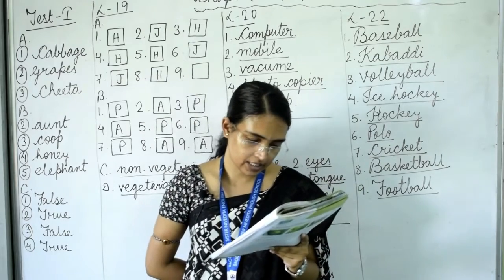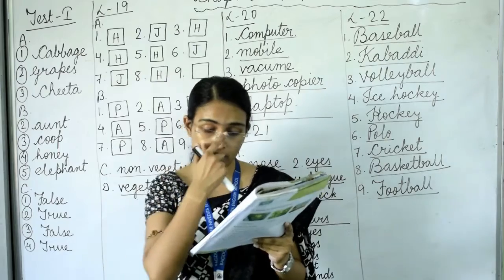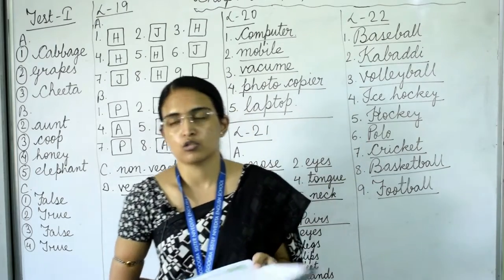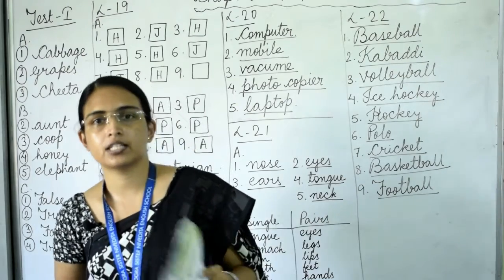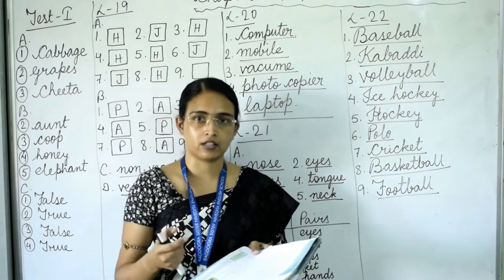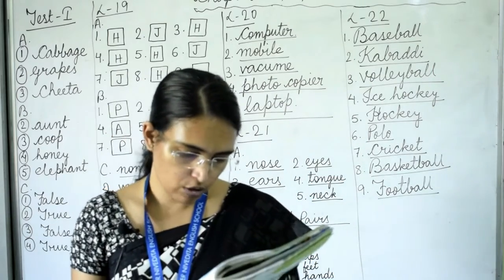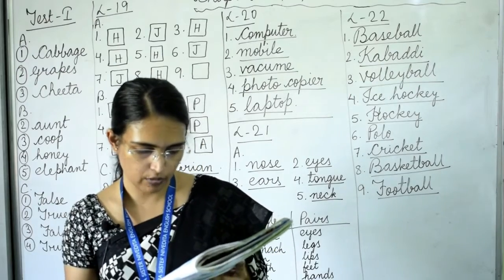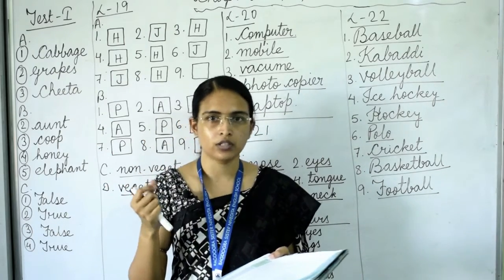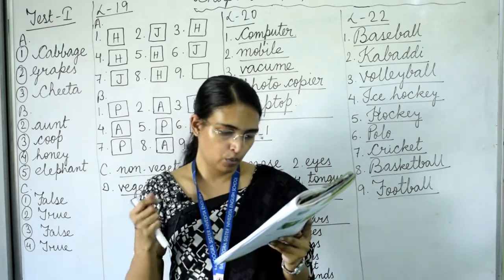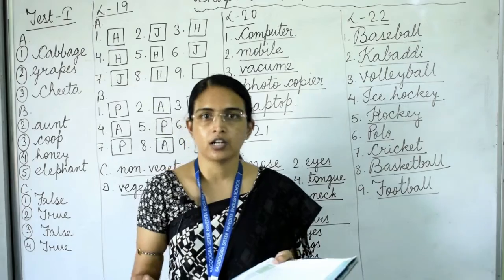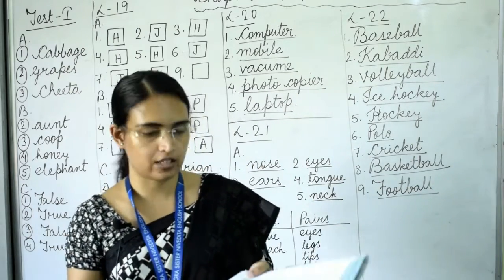Number eight: snakes don't smell things through their nose like we do — they pick up smells with their tongue, which they flick in and out. Number nine: sounds made by insects come from their wings or legs, not from their throat. Whatever sound we hear when an insect flies in front of us comes from their wings or legs.